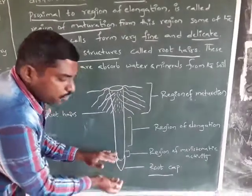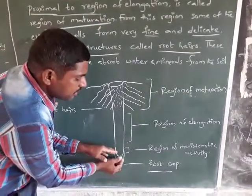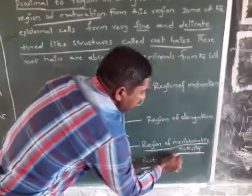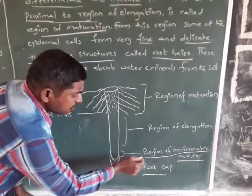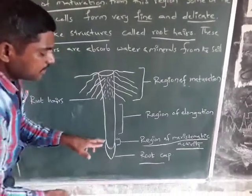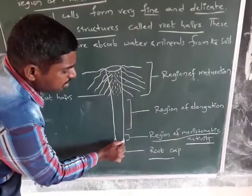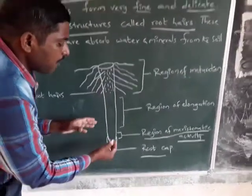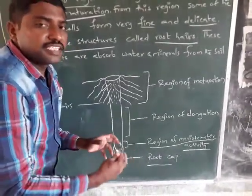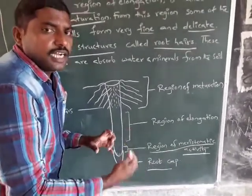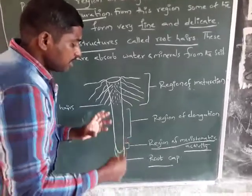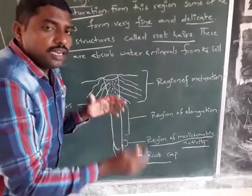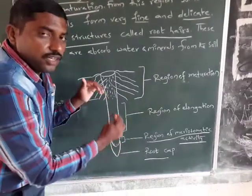A few millimeters above the root cap is the region of meristematic activity. In this region, the cells are very small, thin-walled, and have dense protoplasm, and they undergo repeated divisions. That is why it produces more cells and leads to the growth of the root.